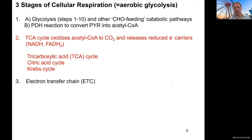Now acetyl-CoA will go into the TCA cycle — that's our second phase of cellular respiration, where we break it down to carbon dioxide and release reduced electron carriers in the form of NADH and FADH2. The TCA cycle is also called the tricarboxylic acid cycle, and another name is the citric acid cycle, named after its first major intermediate. A third name is the Krebs cycle, after Hans Krebs, one of the people who did major work in its discovery and understanding.